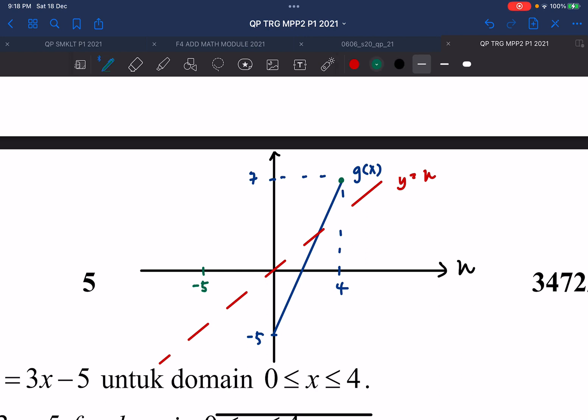So you will get a function which is 7, 4. 7 might be here, just let me sketch the graph first. Then here might be your 4.